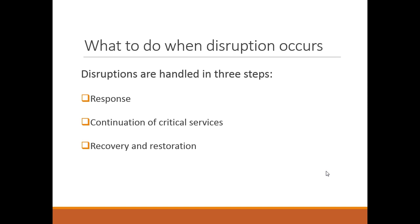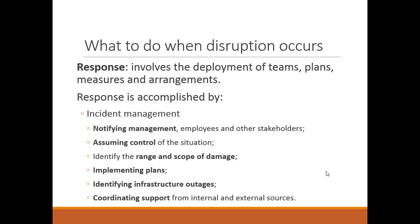When a disruption actually occurs, there are three steps that need to be taken: first, response; second, continuation of your critical services; and third, recovery and restoration. With response, it involves the deployment of the teams, plans, measures, and arrangements that you would already have put in place. You must have a response plan as part of your BCP.